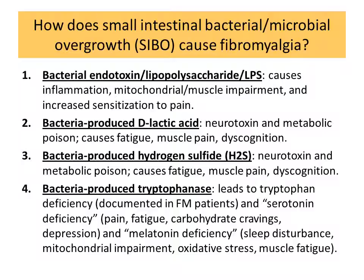Finally, fourth on this short list, is bacteria-produced tryptophanase. Tryptophanase is an enzyme that degrades tryptophan within the gastrointestinal tract, leading to tryptophan deficiency or insufficiency. This has been documented in patients with fibromyalgia — they have low levels of tryptophan in their blood. Tryptophan is the precursor to the neurotransmitter serotonin, so if patients don't have enough tryptophan, they won't have enough serotonin. When patients don't have enough serotonin, they have pain, fatigue, carbohydrate craving, depression, and usually some anxiety. The body converts tryptophan into serotonin, and then serotonin into the hormone melatonin. When patients don't have enough melatonin, they have sleep disturbance and impaired mitochondrial function.